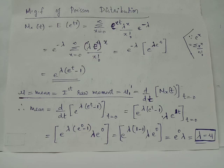We have the moment generating function Mx of t for Poisson distribution is e raised to lambda e raised to t minus 1.